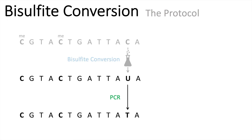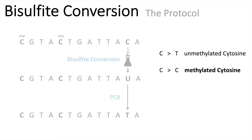After certain rounds of PCR, the uracil will be replaced by thymine. So basically, all unmethylated cytosines will get replaced by thymine in the end. When we compare the DNA sequence now, we can easily figure out where the methylated cytosines occur. All cytosines which are replaced by thymine are considered unmethylated, whereas in regions where the cytosine stays cytosine after bisulfide conversion, we know there we have DNA methylation.